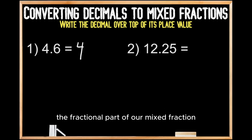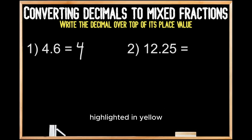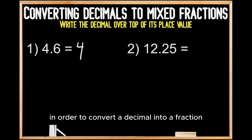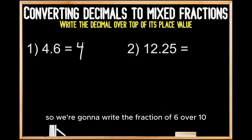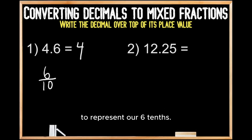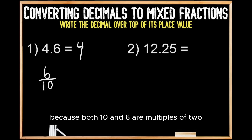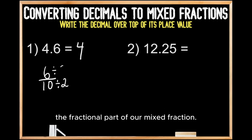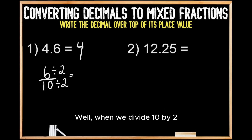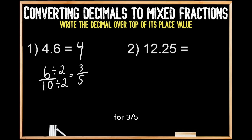That just leaves us with the fractional part of our mixed fraction. As highlighted in yellow up top, in order to convert a decimal into a fraction, we're going to write the decimal over top of its place value. For 4 and 6 tenths, the 6 is in the tenths place, so we write the fraction 6 over 10 to represent our 6 tenths. We can simplify this fraction because both 10 and 6 are multiples of 2. We divide both the denominator and numerator by 2: 10 divided by 2 gives us 5, and 6 divided by 2 gives us 3, for 3 fifths.